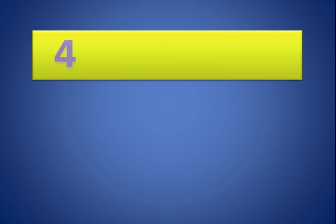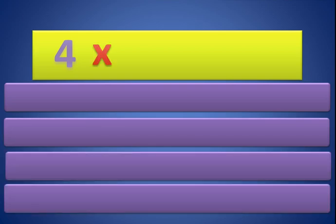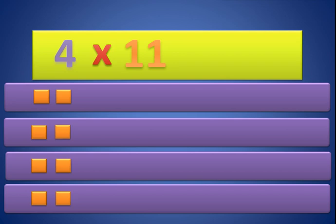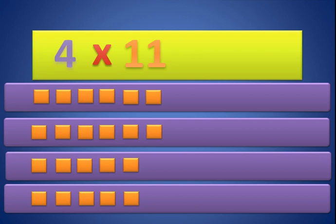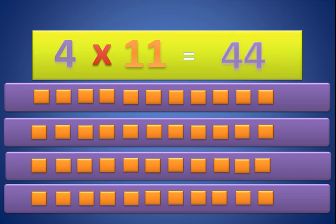Now let's go to 4 times 11. We need 4 groups — 1, 2, 3, and 4. That means we need 11 in each group — 1, 2, 3, 4, 5, 6, 7, 8, 9, 10, 11. That is 44. 4 times 11 equals 44.